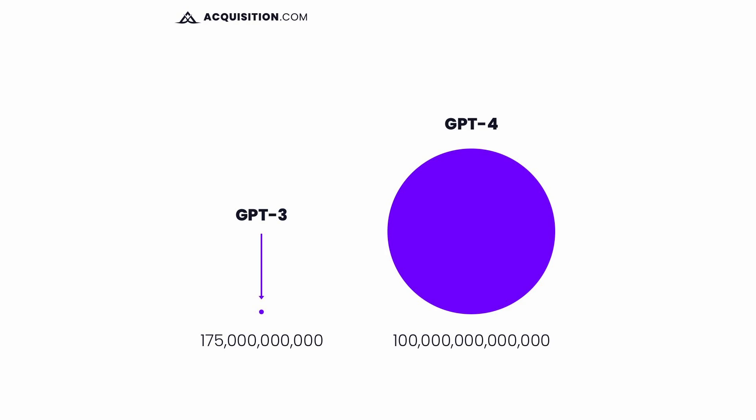ChatGPT is called a generative AI model, which means you provide a prompt and some information and it generates a response based on its training data. The training data includes lots of different things from every corner of the internet. Currently this is running on GPT-3; GPT-4, the next generation, actually trains on a lot more data, as you can see in this chart.